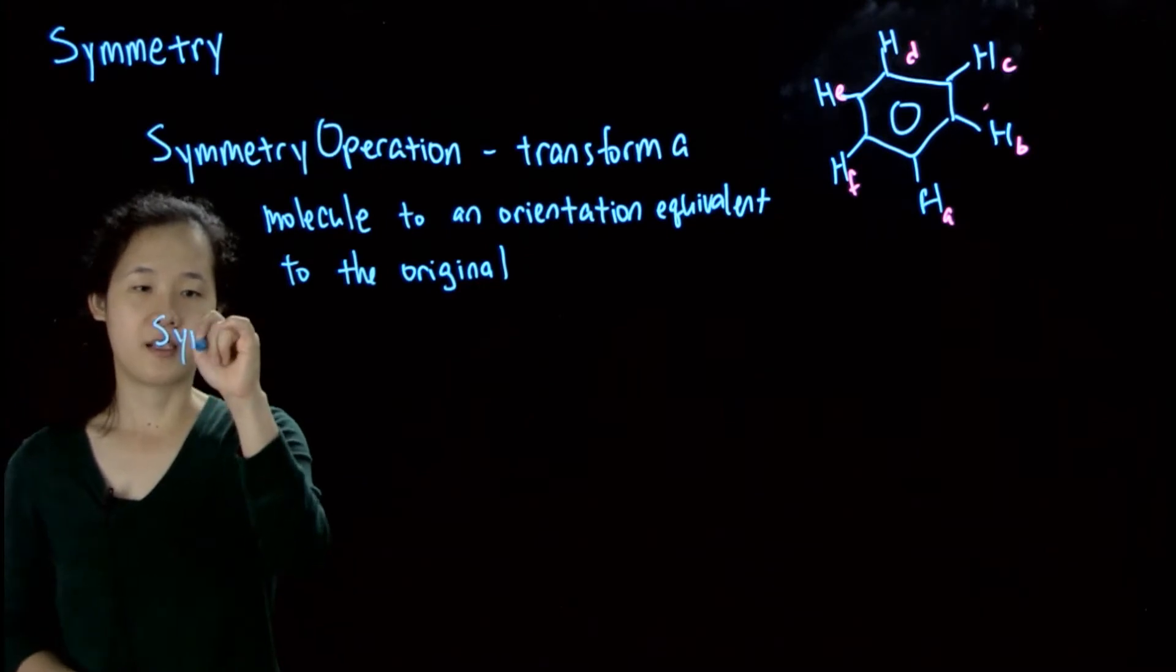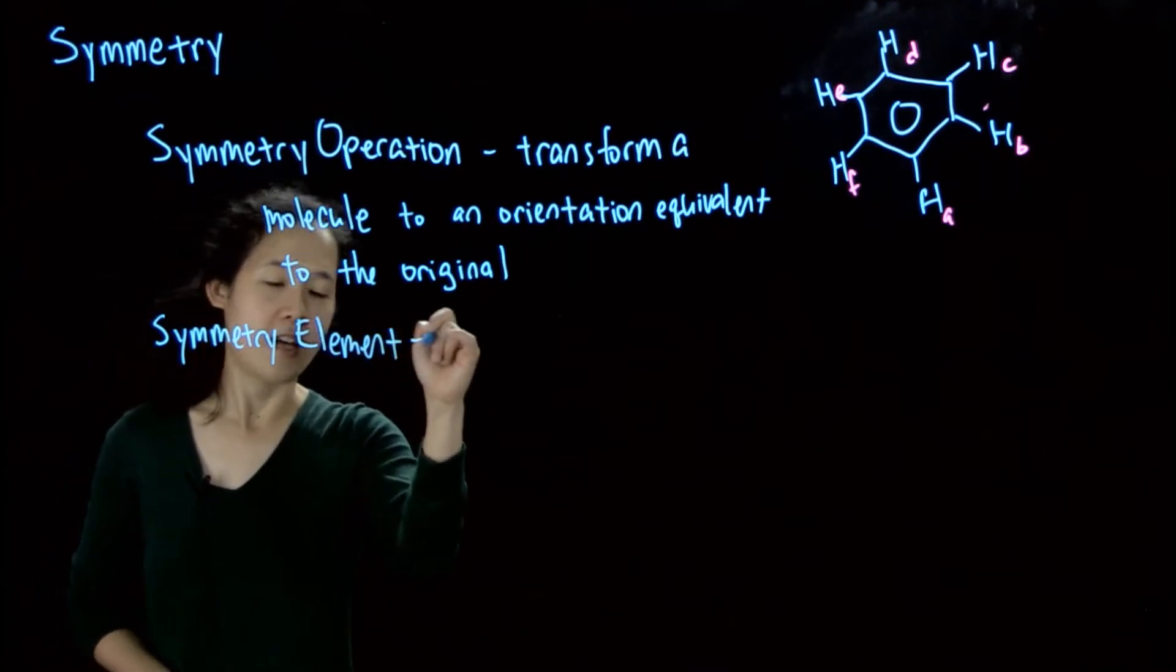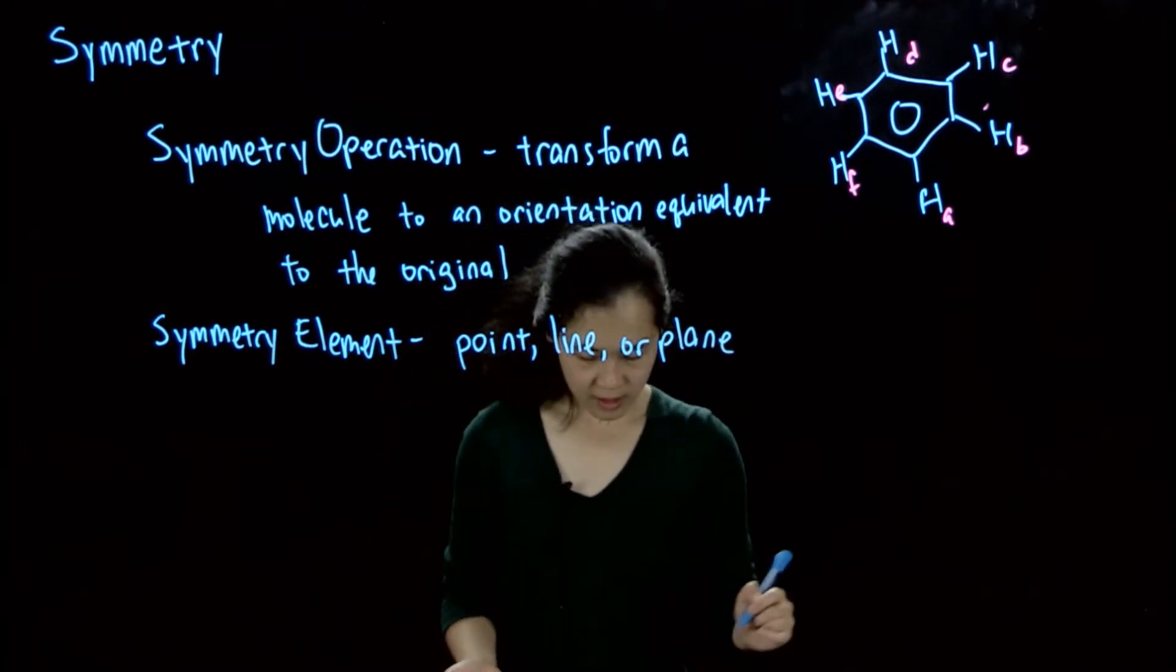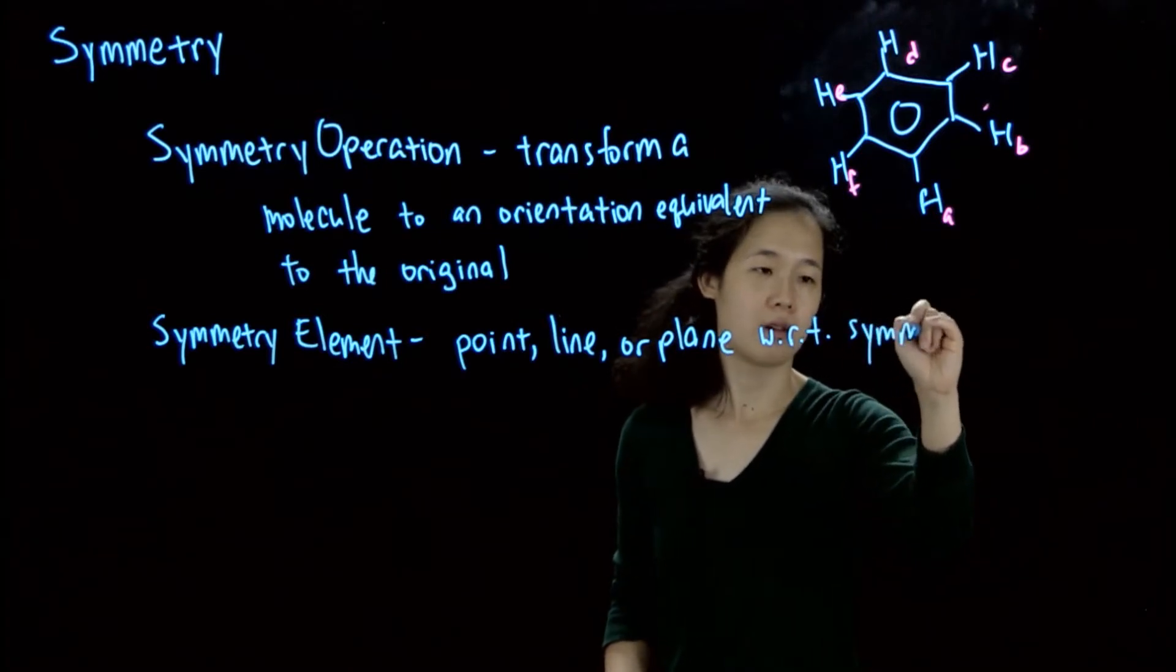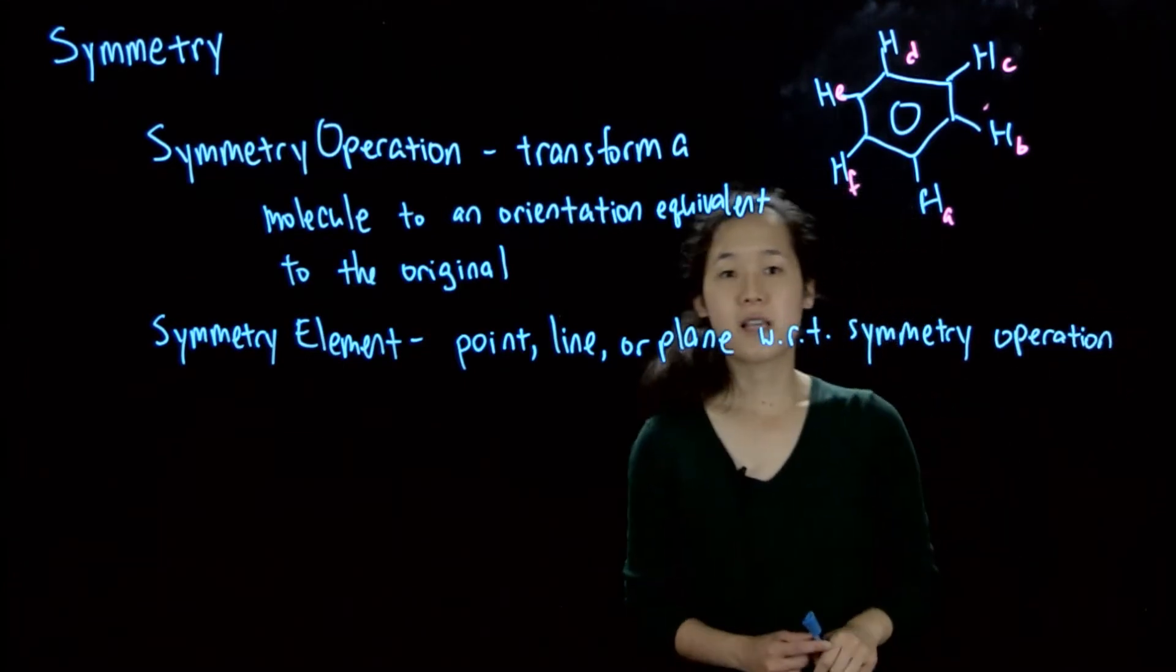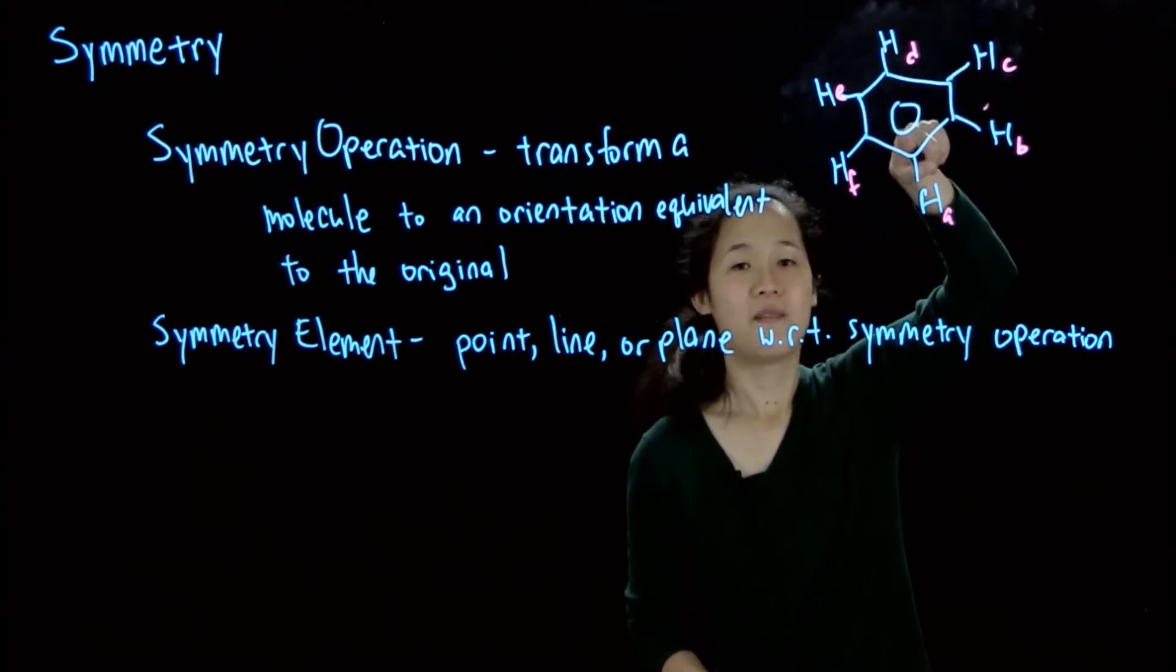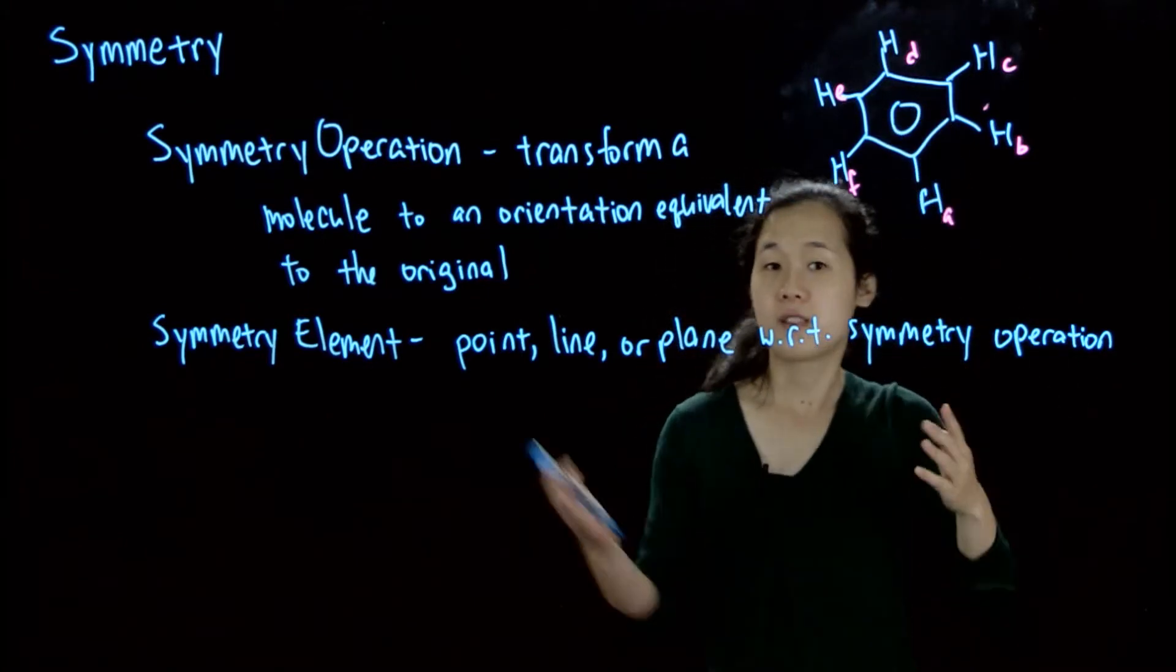you perform it about what's called a symmetry element. So the symmetry element is a point, a line, or a plane about which we do symmetry operations with respect to symmetry operation. So in the example above, if I were to rotate this benzene molecule 180 degrees, let's say rotating this way, if you can follow my finger, we're rotating this about a line perpendicular to this screen.